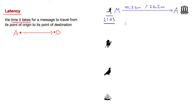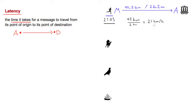Let's also calculate the speed with which the message travels. We know the distance is 42.2 kilometers, and I'll simplify this to 42 kilometers. Dividing this distance by the time it takes to deliver the message, which is two hours, gives us 21 kilometers per hour. That is the speed with which the message travels.